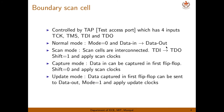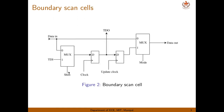Another mode is scan mode. Here all the scan cells are interconnected. Shift should be one and you have to apply clock pulses. The TDI input is applied along with the scan clock, and you get the output at TDO. TDO of the first boundary scan cell is connected as the TDI of the second boundary scan cell, and likewise all boundary scan cells form a serial shift register.